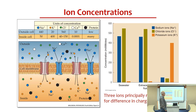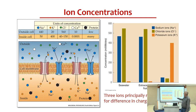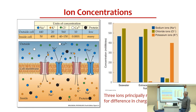First, we have sodium — abbreviation Na+. That plus sign tells us it's a positively charged ion. There is significantly more, almost 10 times as much sodium outside the neuron than inside. If we look at potassium — abbreviation K+ — another positively charged ion — we find 400 inside versus 20 outside, so almost 20 times as much potassium inside the cell than outside.